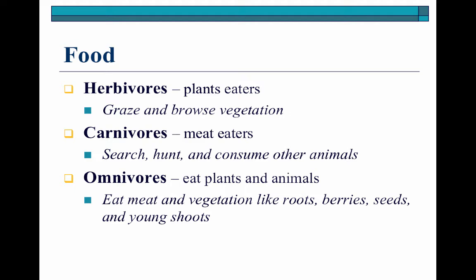Carnivores, of course, are meat-eaters. They're going to spend an explicit amount of time and energy searching for and hunting their food, and then a very short amount of time consuming it. An omnivore is going to be a cross between both of these types — they're going to eat plants and animals. On the vegetation side, their diet is also going to consist of really high energy substances like roots, berries, seeds, and very young shoots. The best example of omnivores are bears.